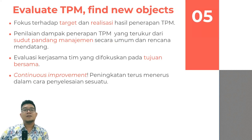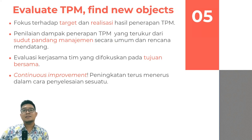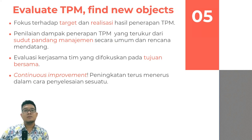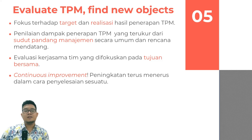Pilar yang kelima yaitu mengevaluasi penerapan TPM dan menemukan objek barunya. Hal ini berarti kita fokus pada target dan hasil realisasi dari penerapan TPM. Bila hasilnya sudah baik maka kita tidak boleh diam, justru kita harus temukan objek baru untuk kita lakukan TPM. Penilaian penerapan TPM ini terukur dari sudut pandang manajemen secara umum dan rencana mendatang, serta evaluasi kerja sama tim yang difokuskan pada tujuan bersama. Pada pilar kelima ini berarti continuous improvement, kita harus tetap melakukan peningkatan terus-menerus.